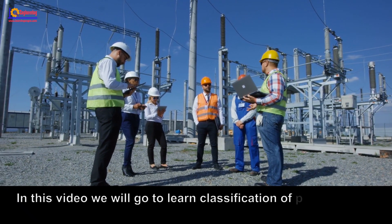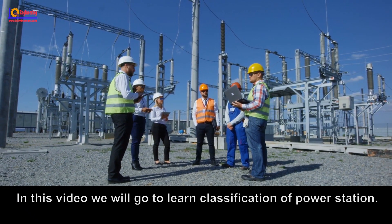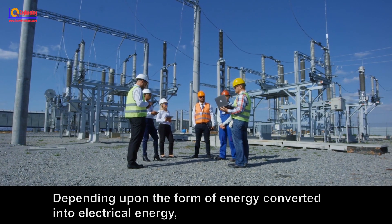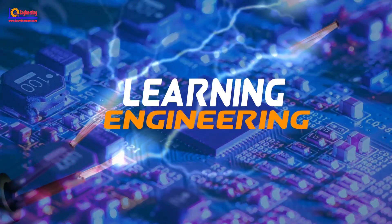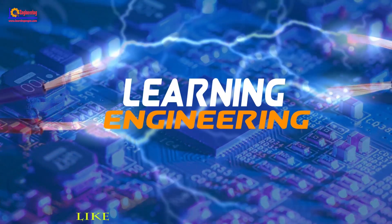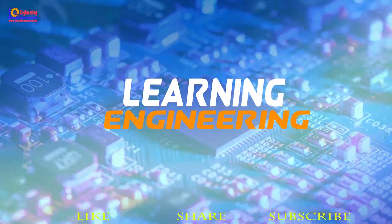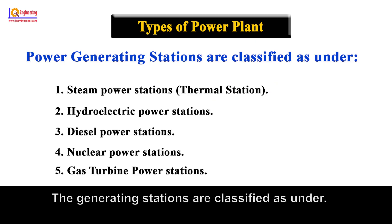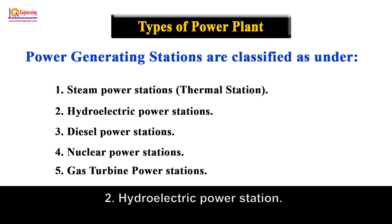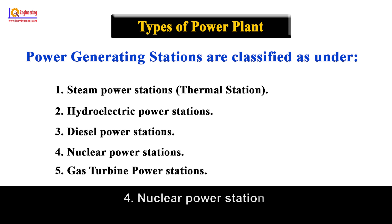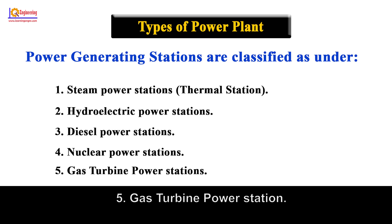In this video, we will learn the classification of power stations depending upon the form of energy converted into electrical energy. The generating stations are classified as: 1. Steam power station, 2. Hydroelectric power station, 3. Diesel power station, 4. Nuclear power station, 5. Gas turbine power station.